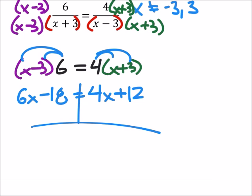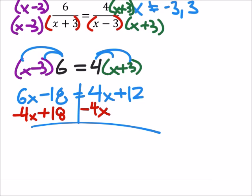So I get 6x minus 18 equals 4x plus 12. And I'm going to put the x's on the left. So I'm going to subtract 4x from both sides. And add 18 to both sides. And I've got 2x equals 30.